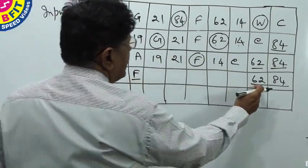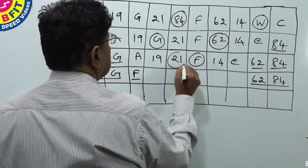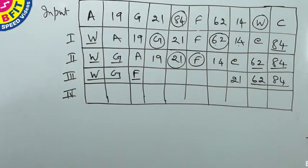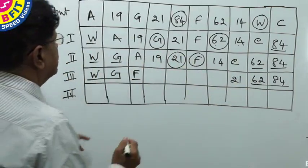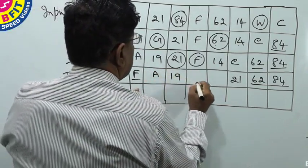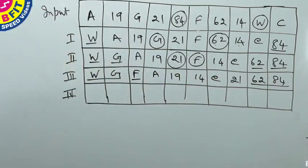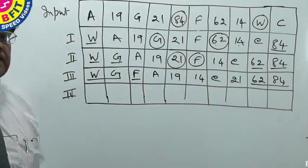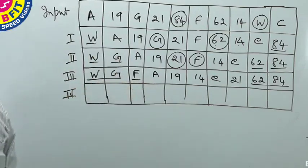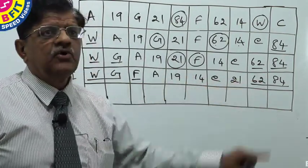What number should come here? Lower than 62 — so 21 will come here. Now we shall shift the remaining: A, 19, 14, C. We have now arrived at step 3. Step 3 is: W, G, F, A, 19, 14, C, 21, 62, 84.